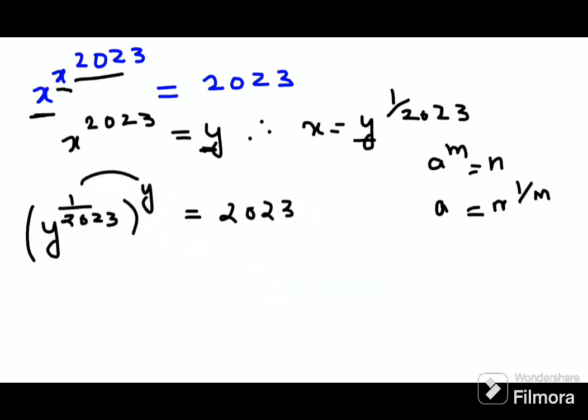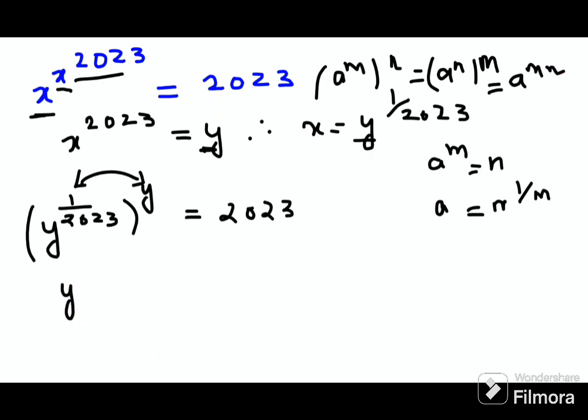Now what I can do is interchange these two. Because we know that a raised to m, the whole raised to n, is also equals to a raised to n, the whole raised to m, because they eventually become a raised to m into n. So this will become y raised to y, the whole raised to 1 upon 2023, and this equals 2023.